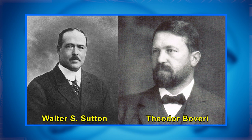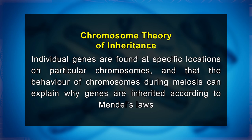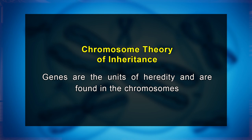In 1902 and 1903, Sutton and Bowery published independent papers proposing what we now call the chromosome theory of inheritance. This theory states that individual genes are found at specific locations on a particular chromosome and that the behavior of chromosomes during meiosis can explain why genes are inherited according to Mendel's laws. It is the fundamental theory of genetics. According to this theory, genes are the units of heredity and are found in chromosomes.